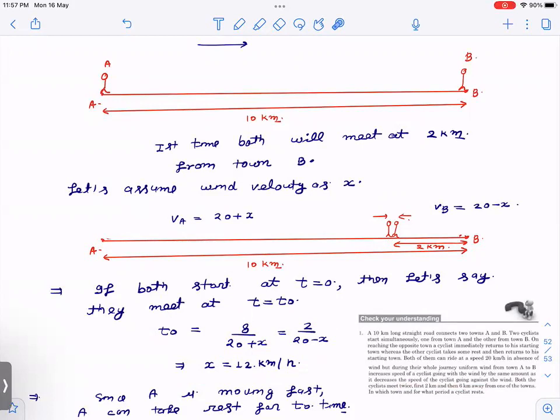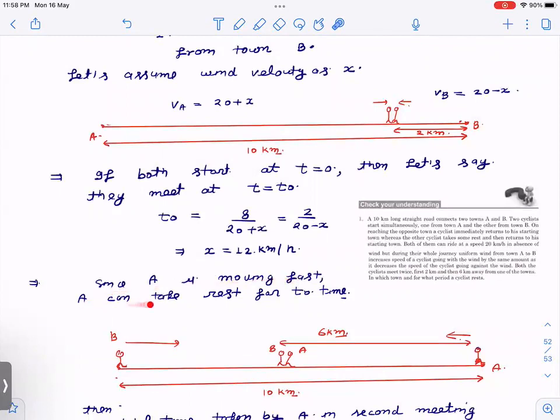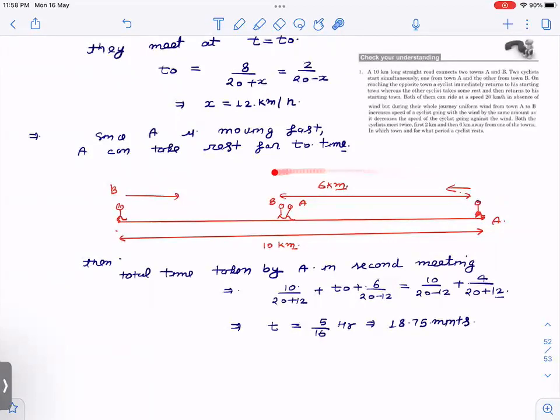But we have to find out who has taken rest and for how much time. Now, since A has come here and then A and B both are meeting here, B is right now here and A has to cover only two kilometers. B has to cover a long distance and the speed of B is also less. The speed of A is more. So the obvious case is that A can take rest and then both start so that they again meet somewhere here. So since A is moving fast, A can take rest for let us say T₀ time.